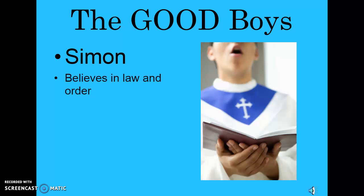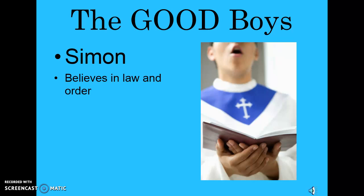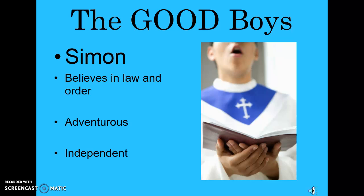Let's move on to Simon. Simon, like Piggy and Ralph, believes in law and order — that things should be done a certain way. He's adventurous and independent, not afraid to go off by himself. Simon becomes one of the most intriguing characters in the book because he is able to separate himself from the boys at times to do what is right. You're going to hear a lot about him in Chapters 8 and 9, where he completely changes the boys' perspective and the plot for the rest of the book.